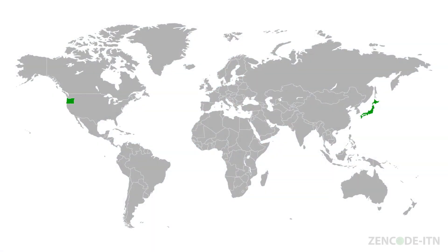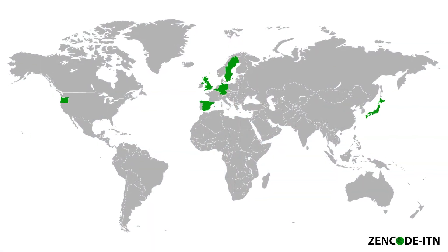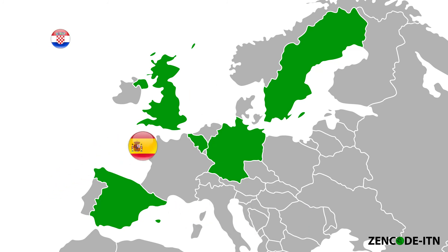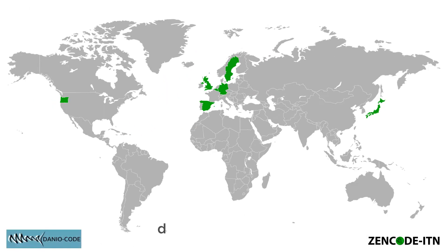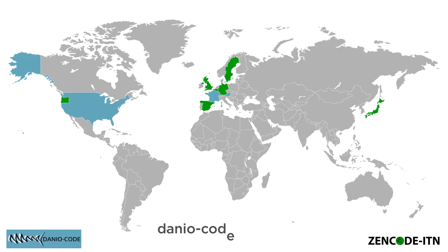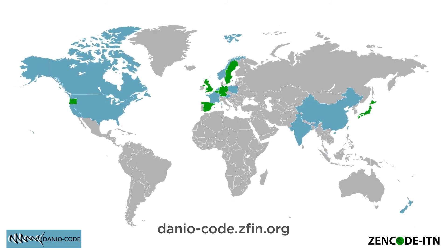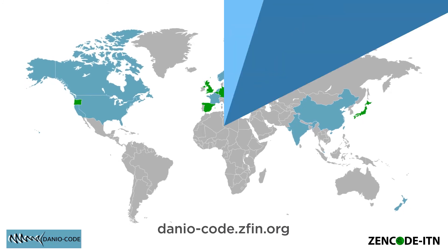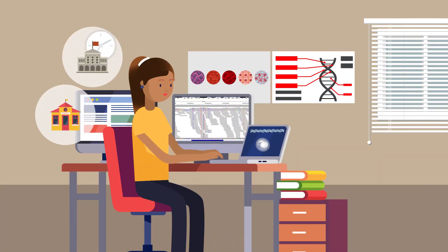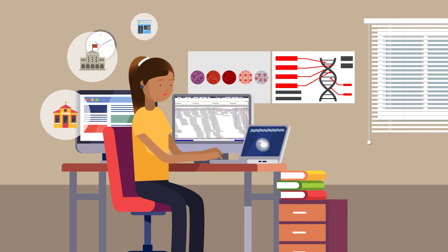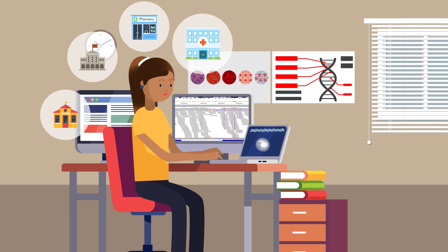We are a research network of 15 young researchers across Europe, funded by the European Commission under the Horizon 2020 programme. We have partnered with the DanioCode Consortium to compile our findings in a database aiming to annotate the functional elements in the zebrafish genome. This knowledge will help us understand better how we function and, ultimately, it will allow us to develop better drugs and treatments for our patients.